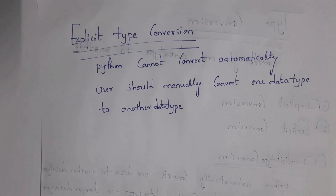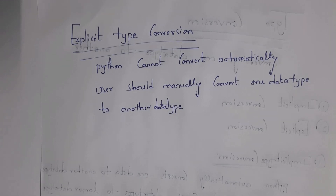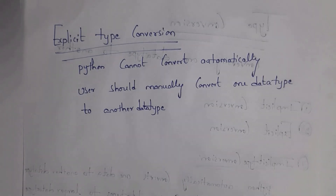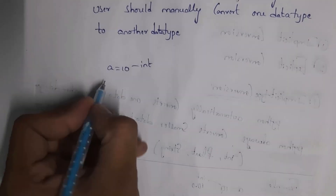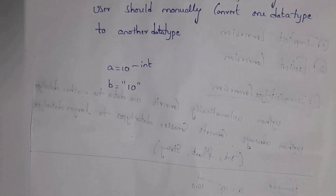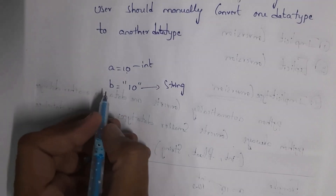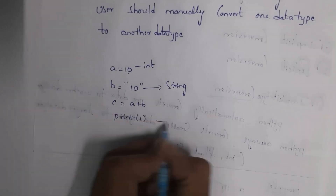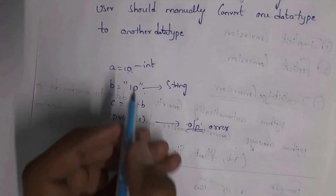In explicit type conversion, Python cannot automatically convert one data type to another — the user must do it manually. For example, a = 10 (integer) and b = '10' (string, written in double quotations). If I write c = a + b and print(c), it will display an error because Python cannot add an integer and a string automatically.